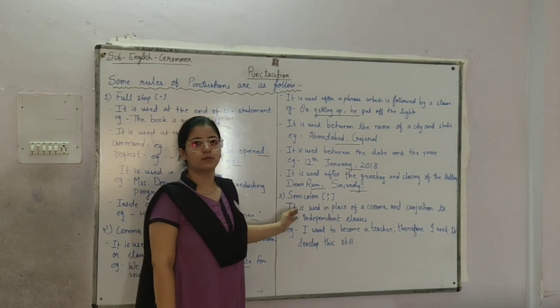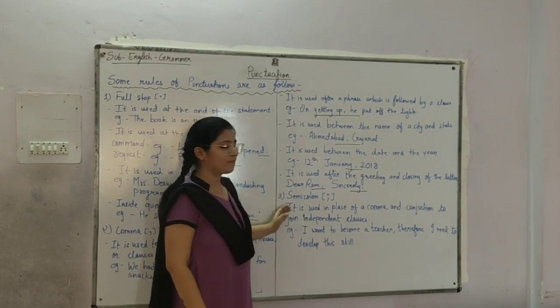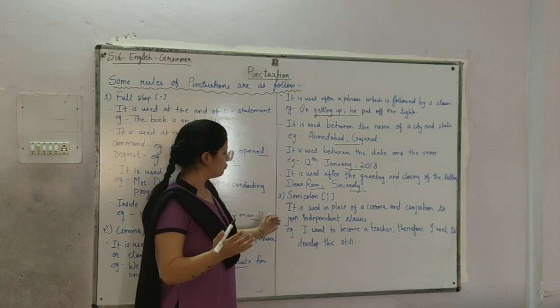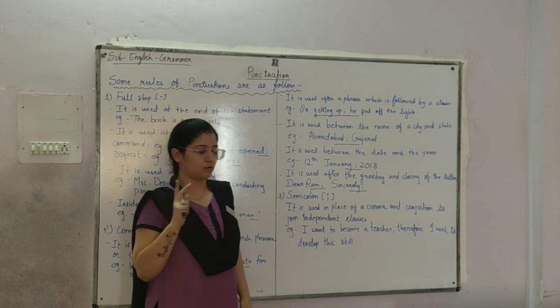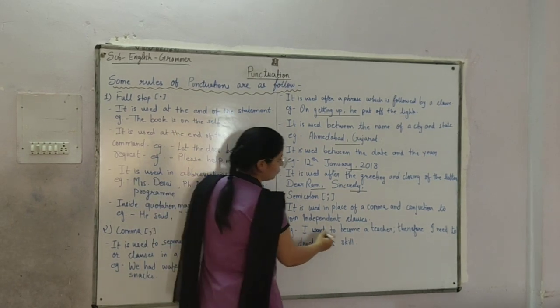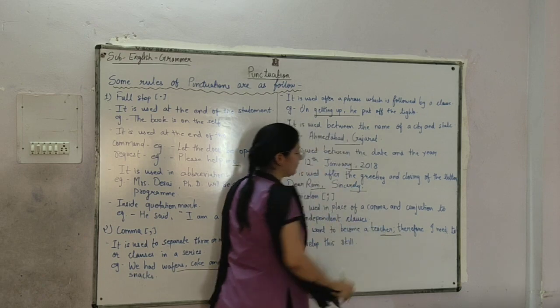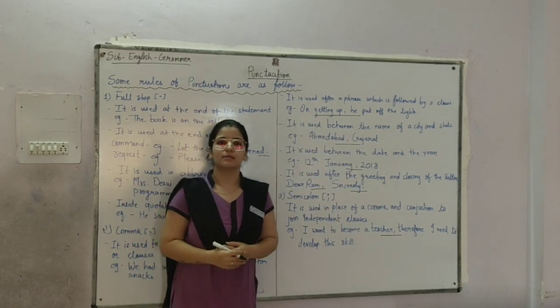Next is third one, semicolon. It is used in place of comma and conjunction to join an independent clause. For example, I want to become a teacher; therefore, I need to develop this skill.